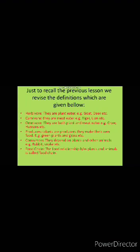Producers — plants are producers; they make their own food, for example, green plants and grass. Consumers — they depend on plants and other animals, for example, rabbit, snake, etc. The food relationship between plants and animals is called a food chain.